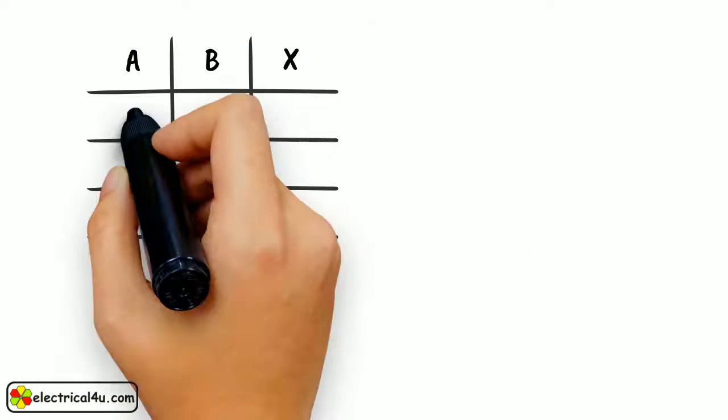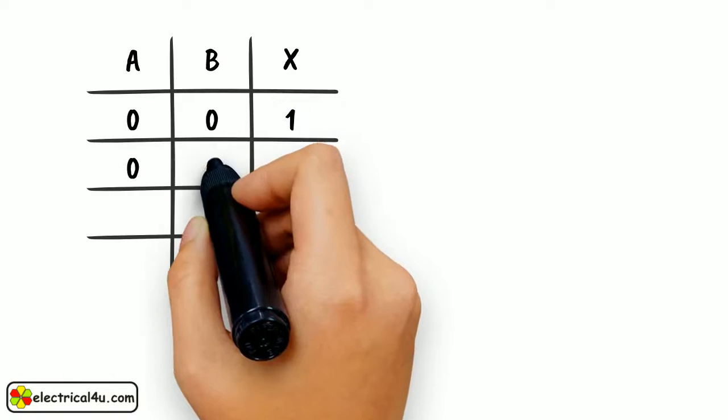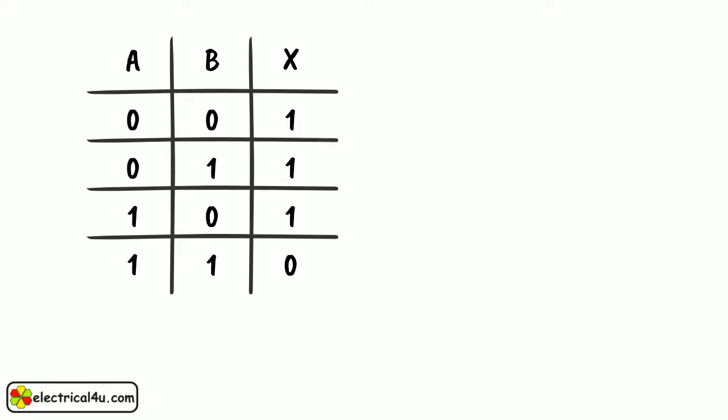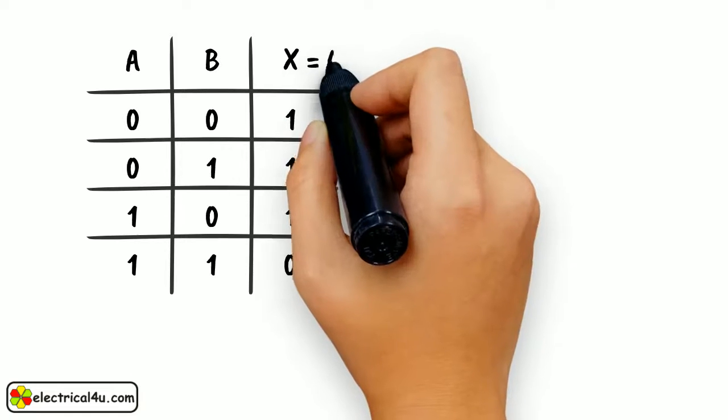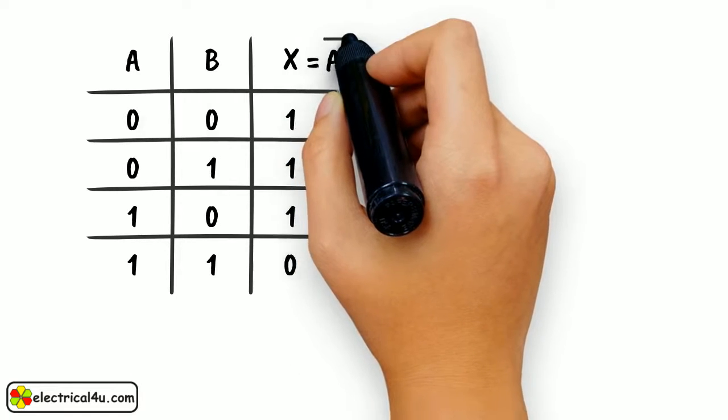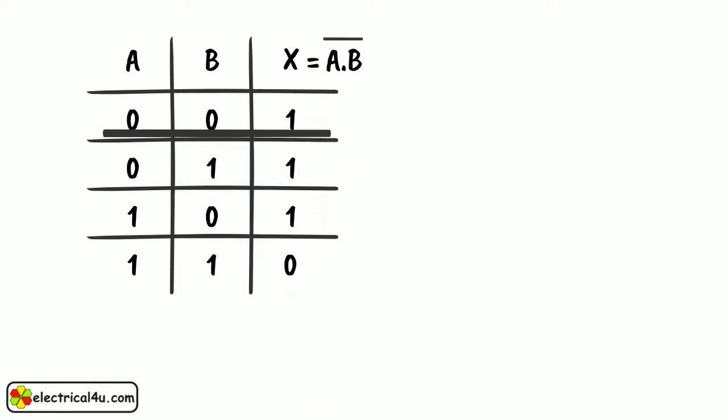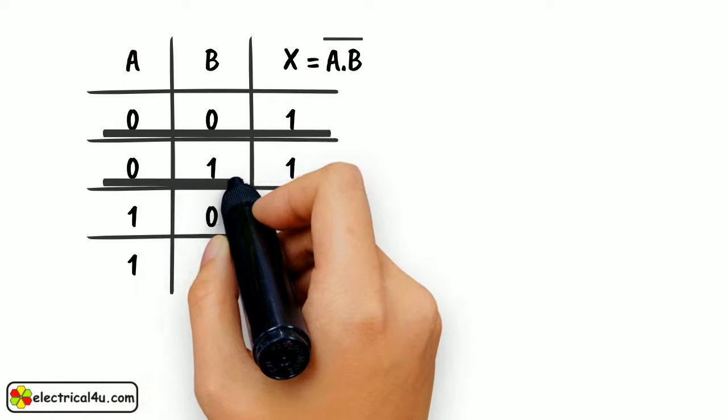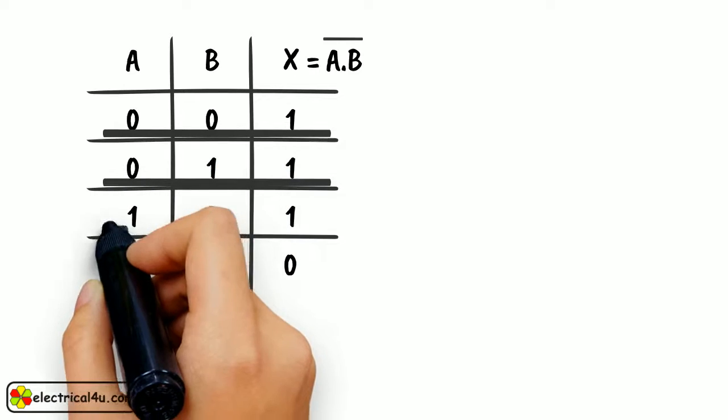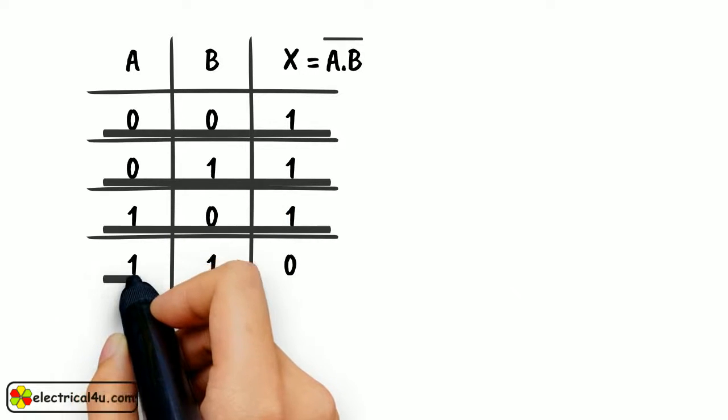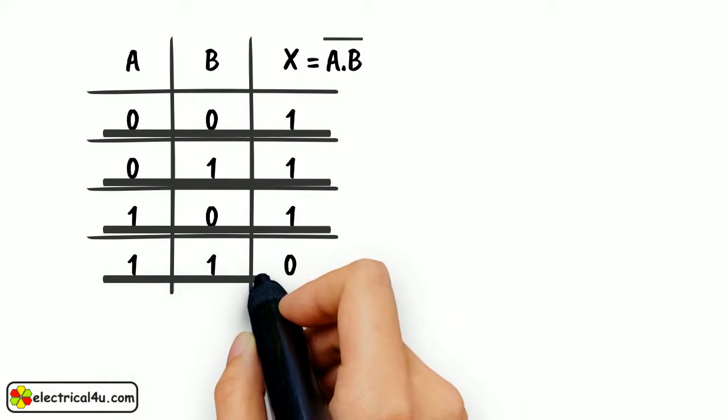The truth table of a NAND gate is shown here. The output is A dot B bar. When A and B are both 0, the output is 1. When A is 0 and B is 1, the output is 1. When A is 1 and B is 0, the output is 1. And when both A and B are 1, the output is 0.